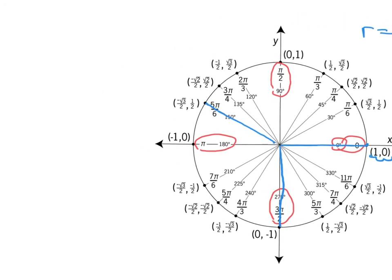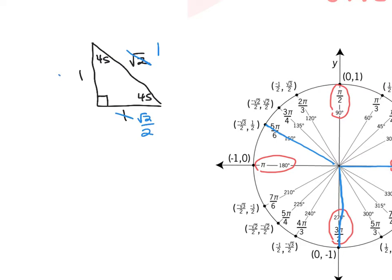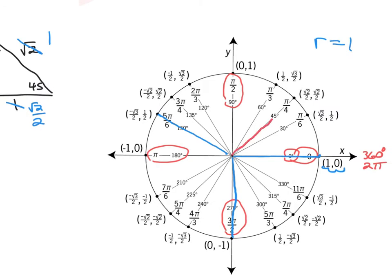If you recall from before, when we did Chapter 5, our right triangles for the 45-45-90 had sides 1, 1, root 2. What's going to be different now is the hypotenuse is now going to be equal to 1. So my legs are now going to be the square root of 2 over 2, because I had to rationalize that. If I pull a 45-degree triangle on the unit circle, my theta is 45 degrees, the right angle is here, the hypotenuse is always 1, and these legs are root 2 over 2, root 2 over 2.